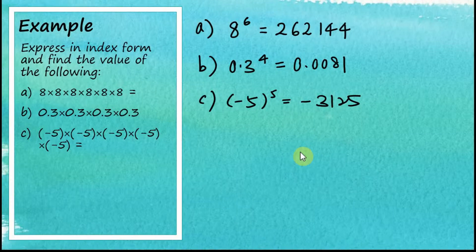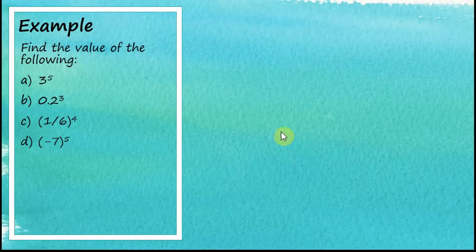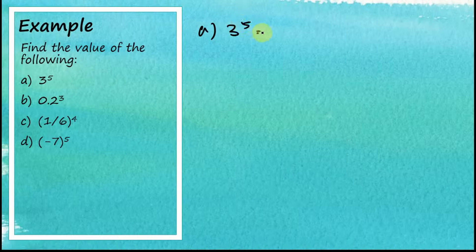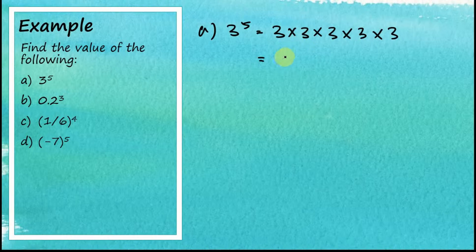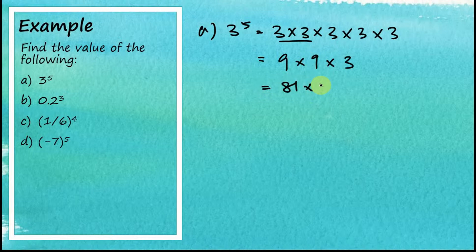Let's proceed to the next questions: find the values of the following. The first one, three to the power of five: 3 × 3 × 3 × 3 × 3. Three times three is nine, nine times three is 27, 27 times three is 81, and 81 times three equals 243.